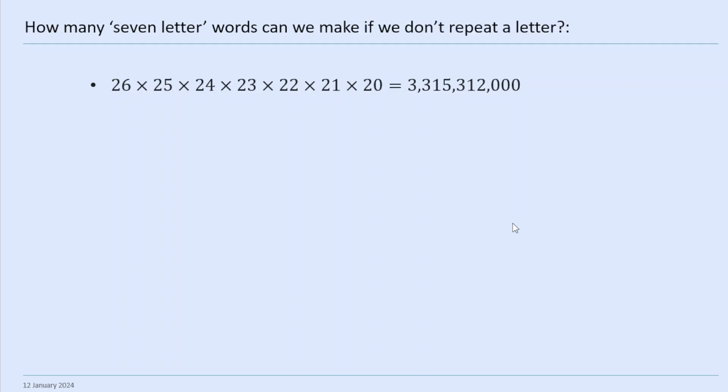How many seven-letter words can we make if we don't repeat a letter? In this case, we've got 26 choices for the first, only 25 for the second, 24 for the third, and so on. We've got 20 choices for the seventh letter. So that is 3,315,312,000 — quite a lot smaller.